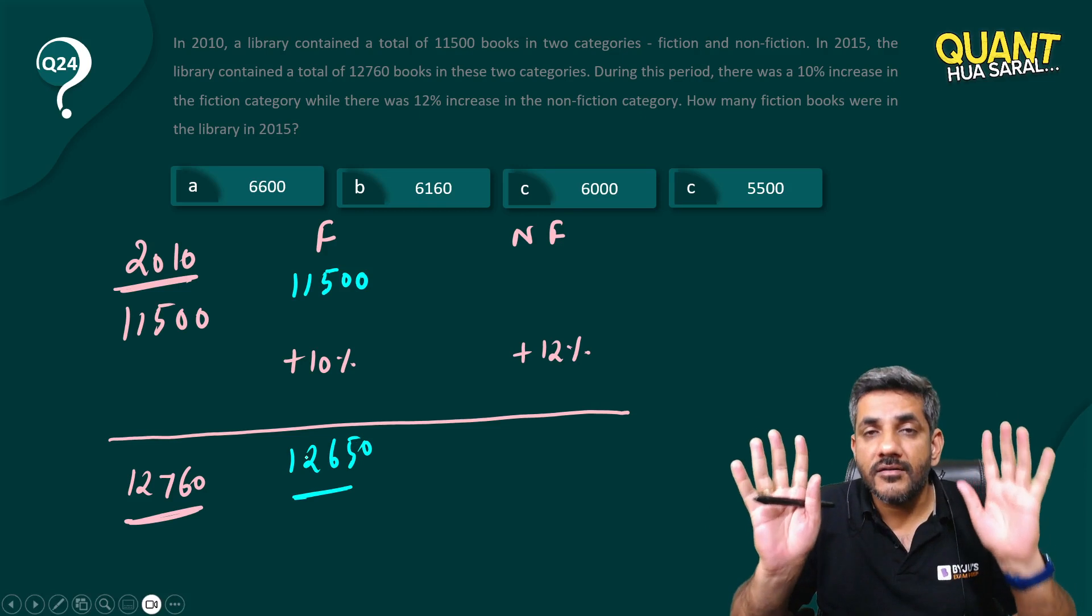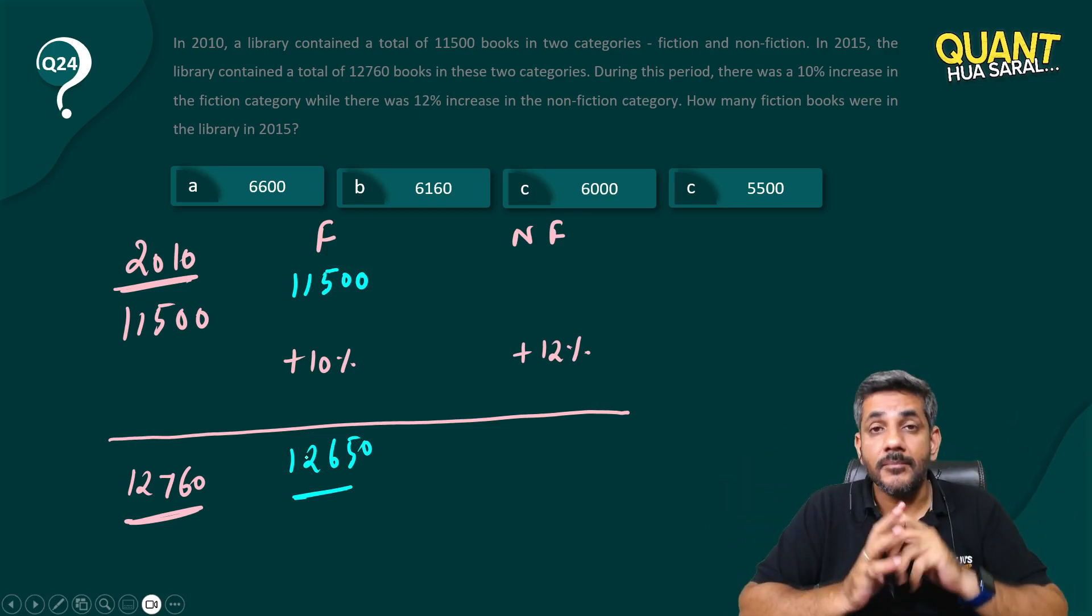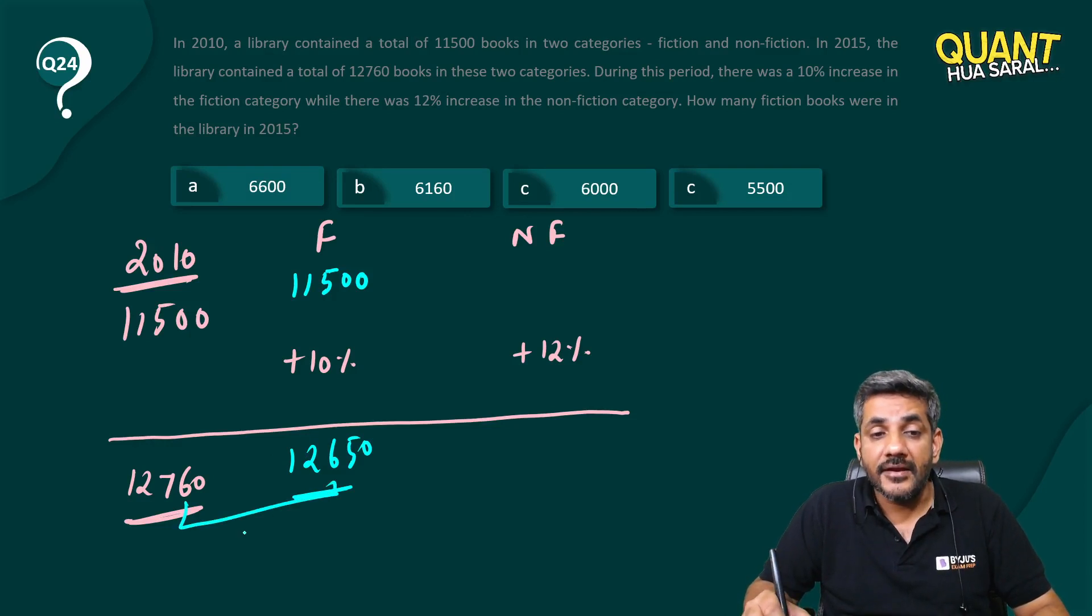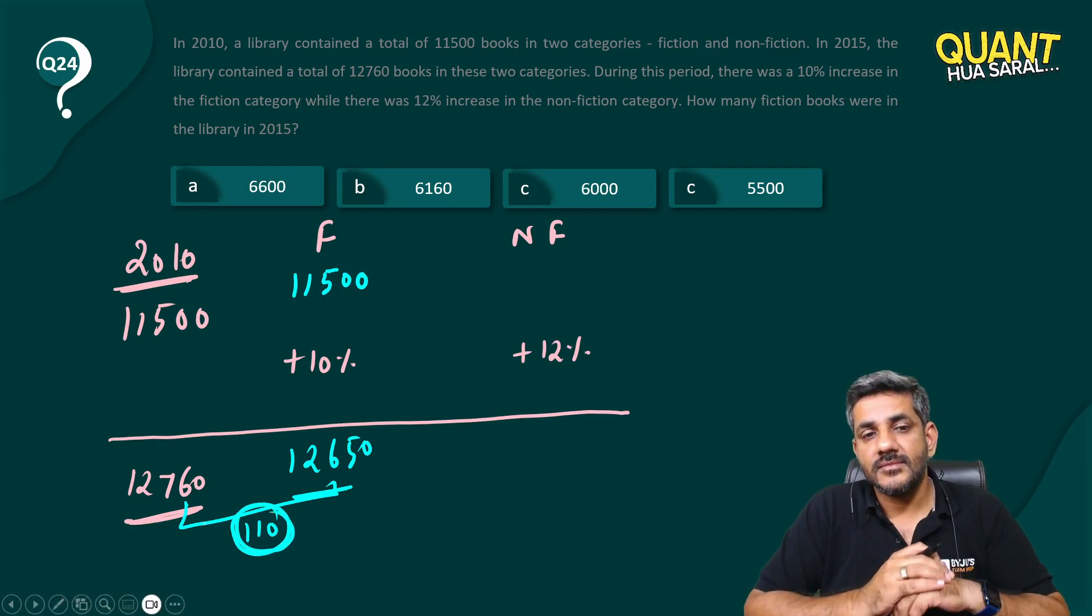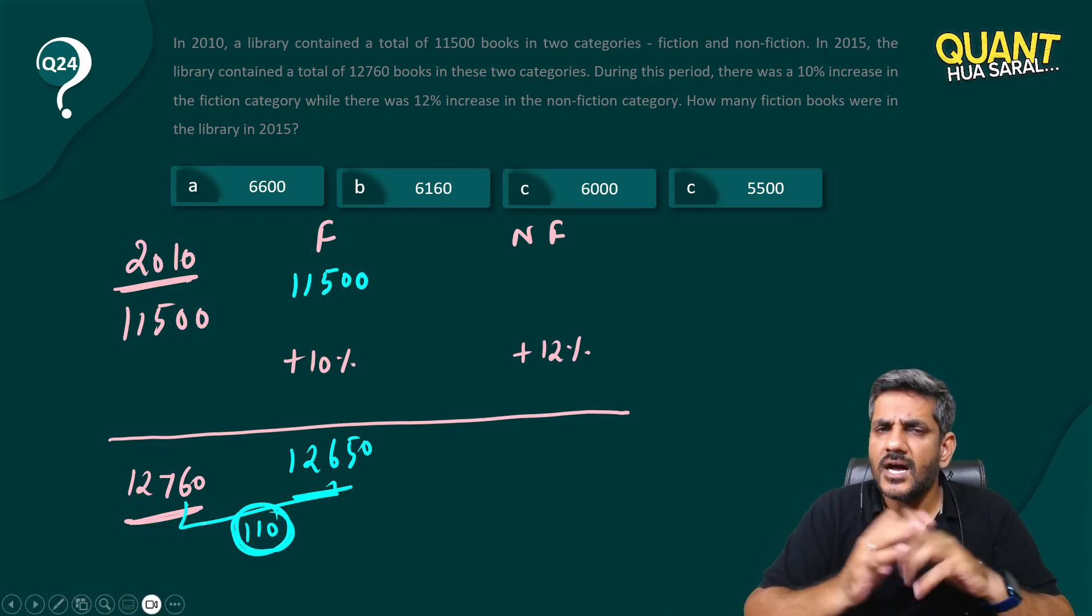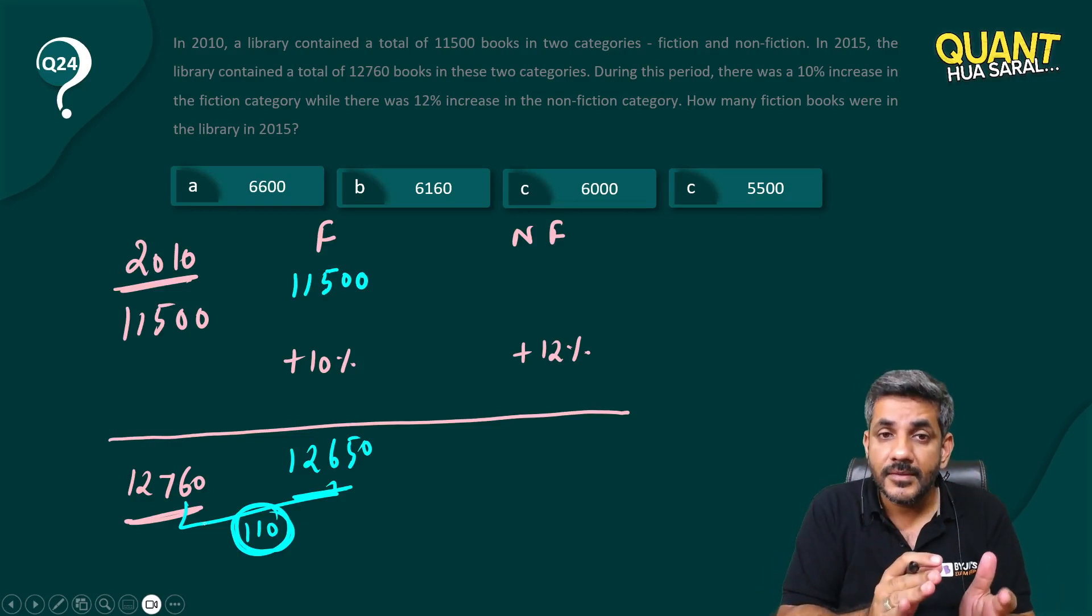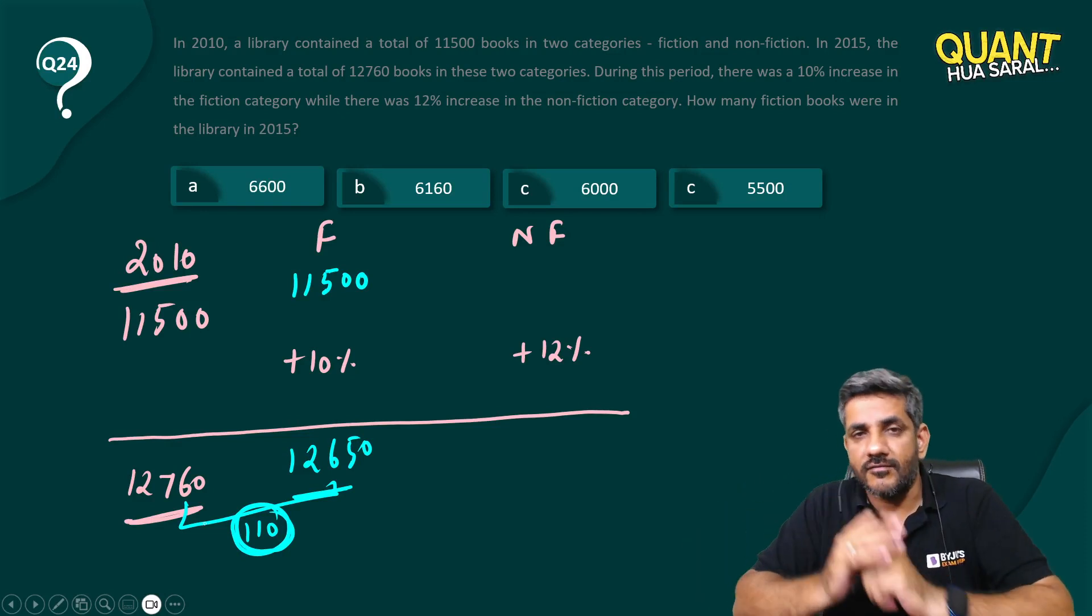So if all books were fiction, my total would have become 12,650. But I want the total to be 12,760. That means, I need 110 more in this increase. I need 110 more in this increase. How would that increase come? I will have to shift some fiction books into the category of non-fiction.